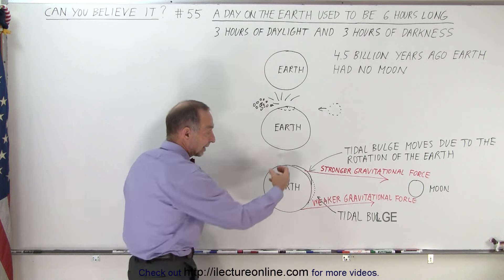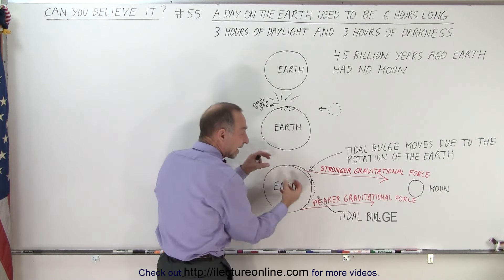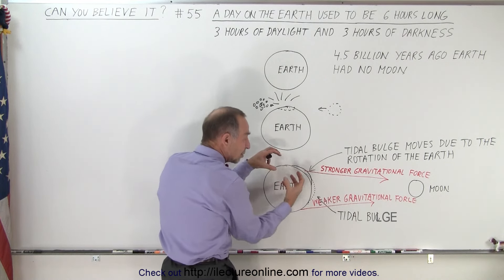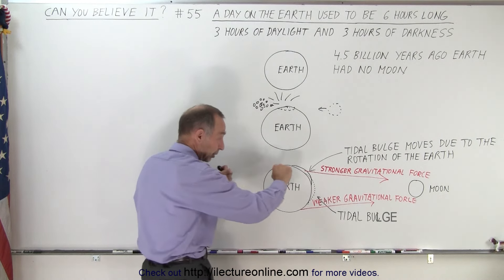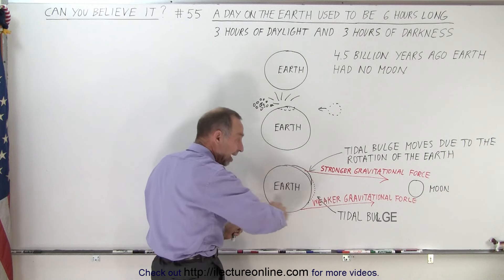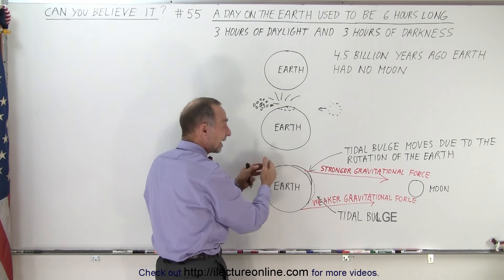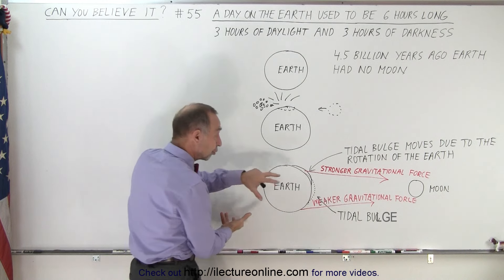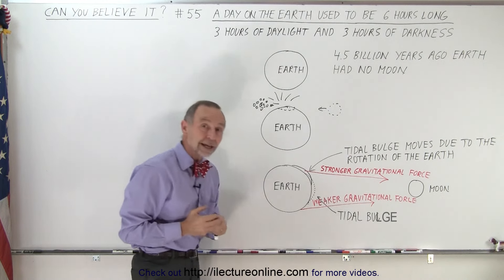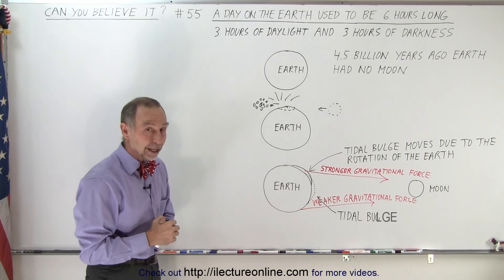And because of that, this side gets pulled more than this side, which causes the rotation to be pulled against, in a way, it's kind of like a rope pulling on the earth. And slowly over time, over the billions and billions of years, this difference between the gravitational attraction has caused the earth to slow down from a 6-hour day to about a 24-hour day.